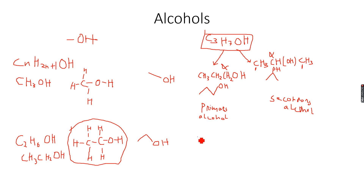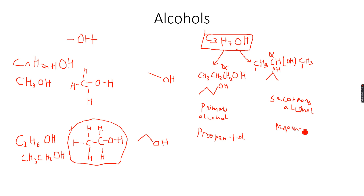We name the first alcohol propan-1-ol because the alcohol group is on the first carbon atom, giving us 'one', and 'prop' because there are three carbon atoms. The second alcohol is known as propan-2-ol because the alcohol group is on the second carbon atom. So propan-1-ol and propan-2-ol are two different isomers of propanol, which is C3H7OH.